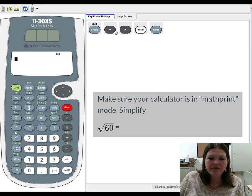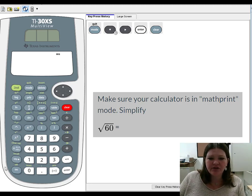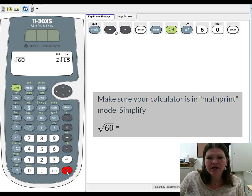So notice that the square root key is actually in green, middle left of your calculator, right above x squared. Anytime you want to use any of the green functions on the GED calculator, you need to hit this green second button. So I'm going to hit the green second button so that I can get my square root up here. And it should look like this with no parentheses if you're in the right mode. And then I'm going to hit 60 and enter.